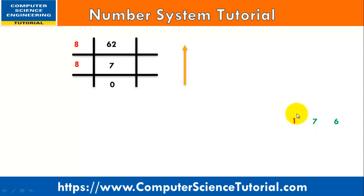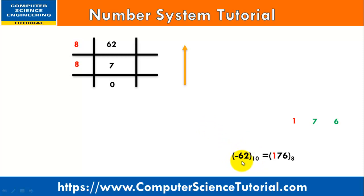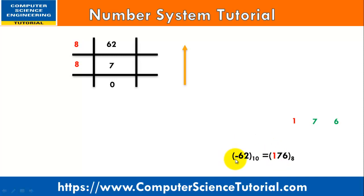To represent a negative number, we put 1 before the number. So we write 176, where 1 represents the sign of the number — 1 represents negative and 0 would represent positive. Therefore, minus 62 decimal is equivalent to 176 base 8, where the leading 1 represents the negative sign.